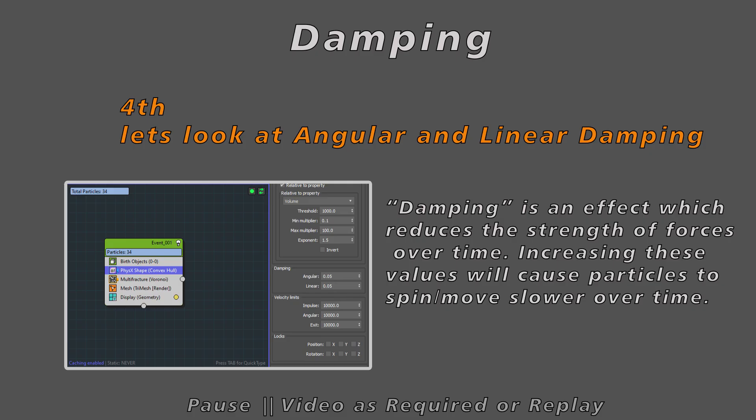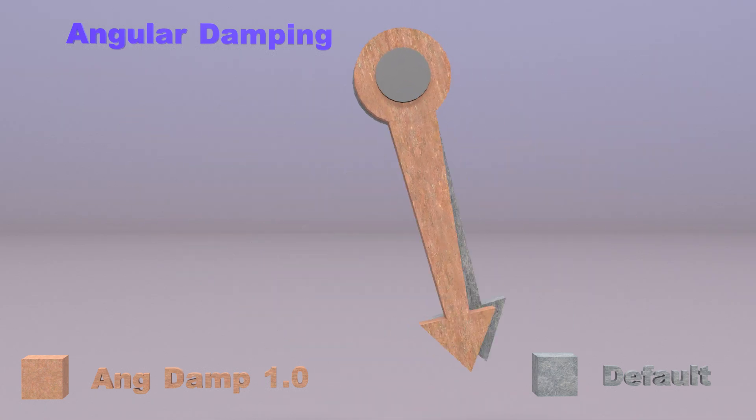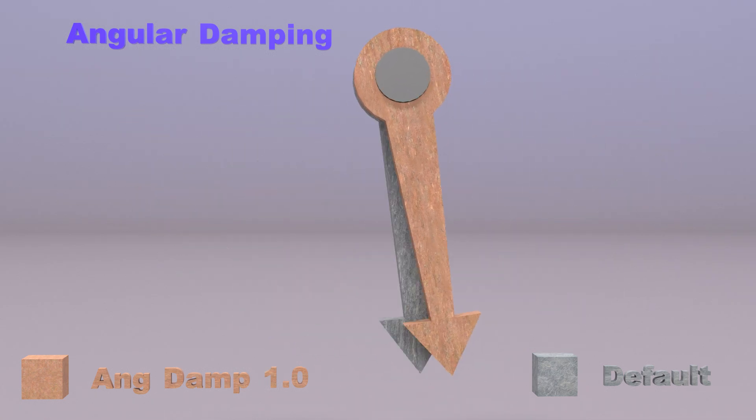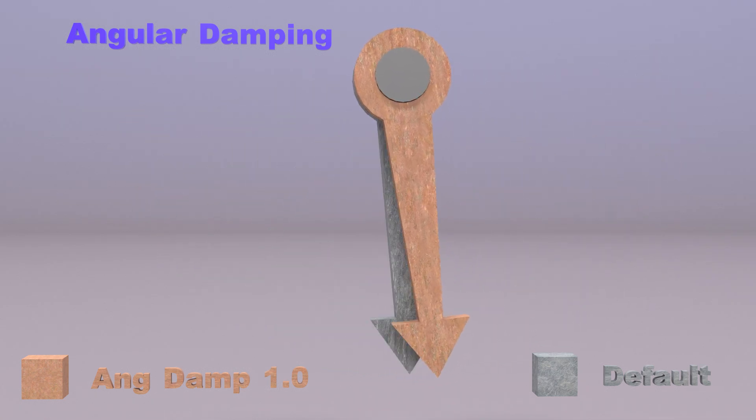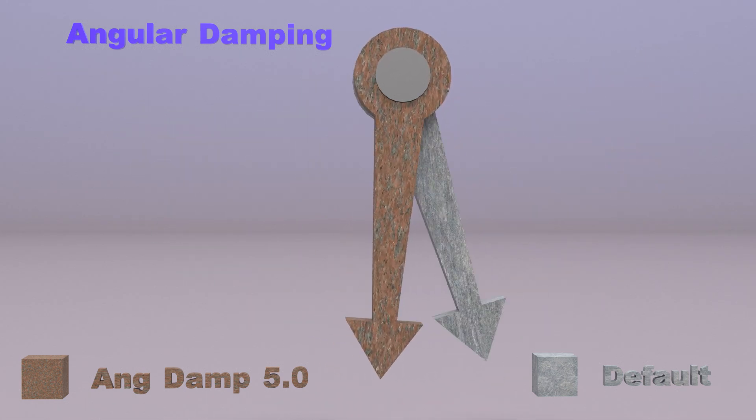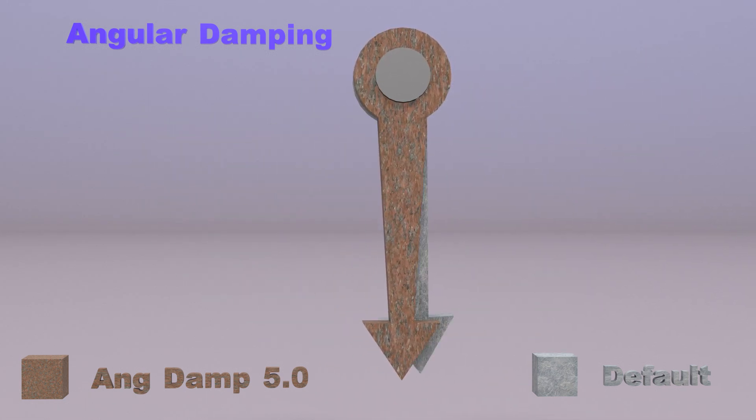Dampening. Dampening is a cool thing that kind of slows down things over time and you should play with these different settings to get awesome effects on your animation.